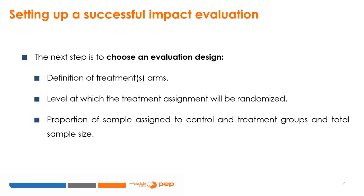The first is an exact definition of treatment arms — you must describe in detail exactly what each intervention will consist of. The second element is the level at which the treatment will be randomised, which may not necessarily be the individual level. The third element refers to the proportion of the sample assigned to control and treatment groups and the total sample size, determined through power and sample size calculations.